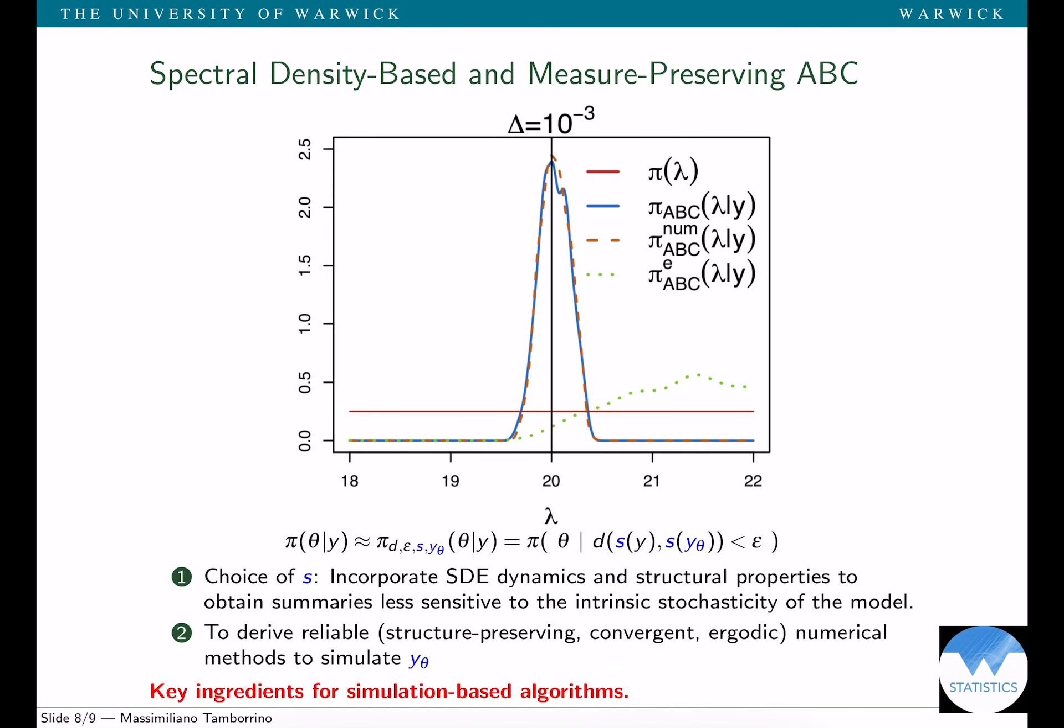If we combine these two key features: I was trying to stress the importance of choosing summary statistics that incorporate the SDE dynamics, that are based on the properties of the model, but at the same time are less sensitive to the intrinsic stochasticity of the model. The idea is to think about summaries where two different realizations are mapped to the same object when the original parameter used for simulating them was the same. In this case, the summaries that were less sensitive were the invariant density and the invariant spectral density.